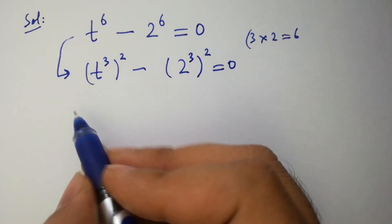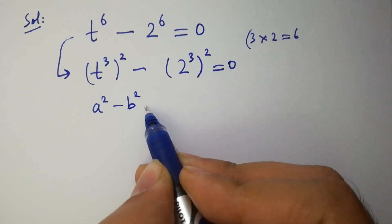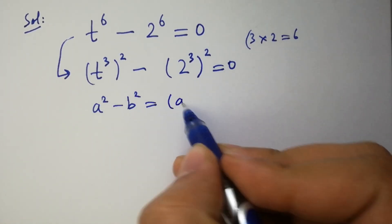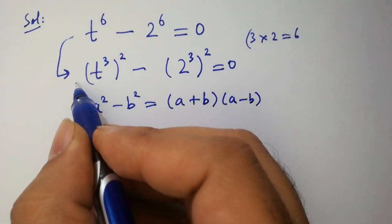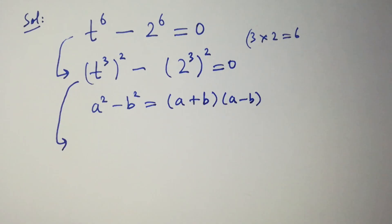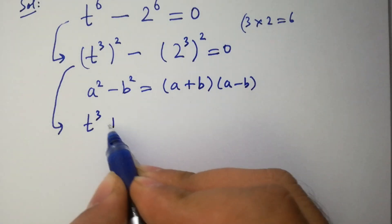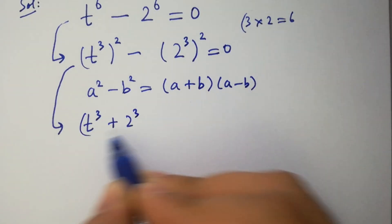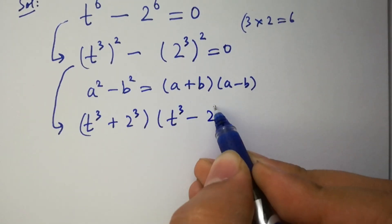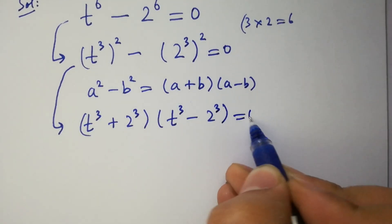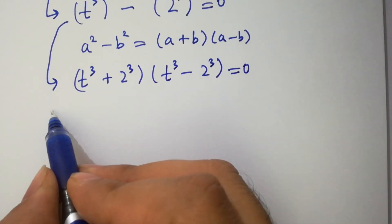As we know, a squared minus b squared equals a plus b times a minus b. Then we have t cubed plus 2 cubed times t cubed minus 2 cubed equal to 0. We have two cases here.